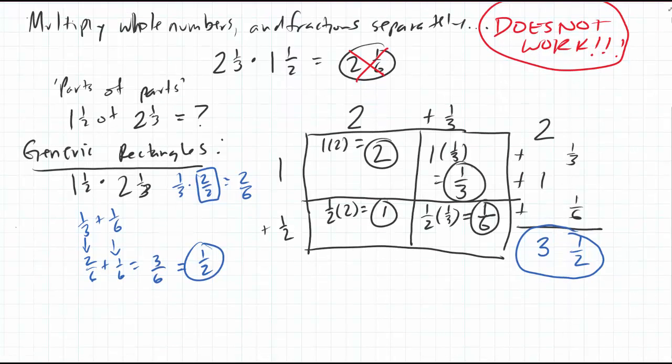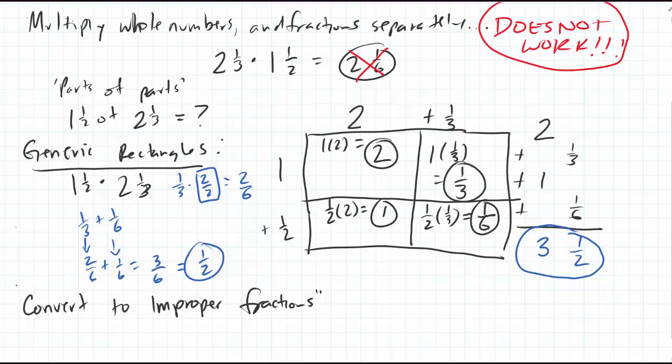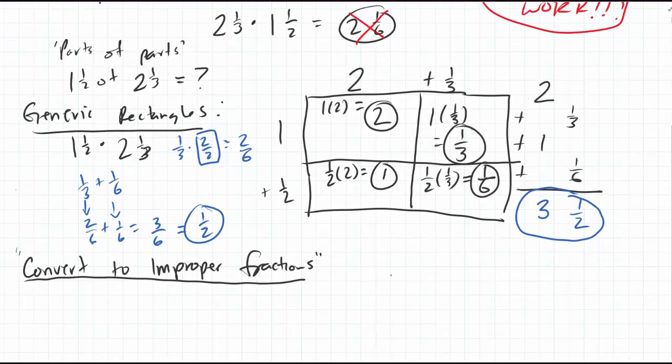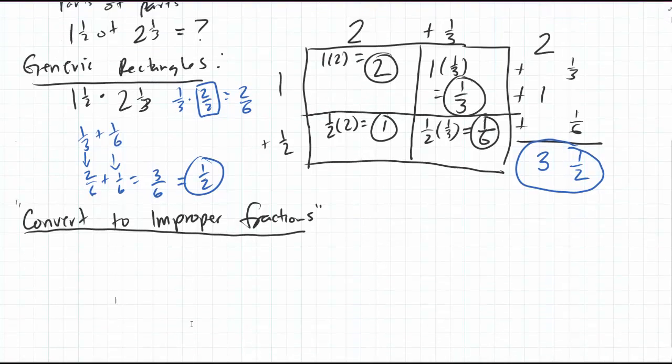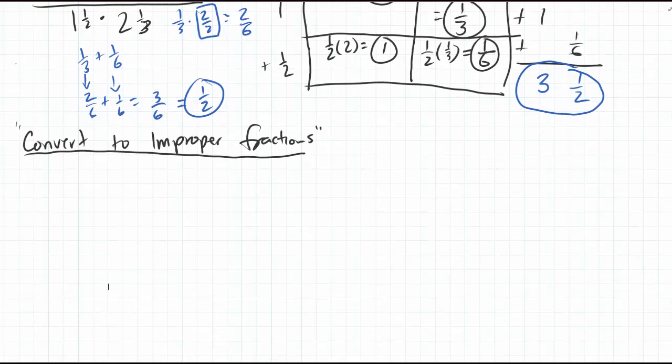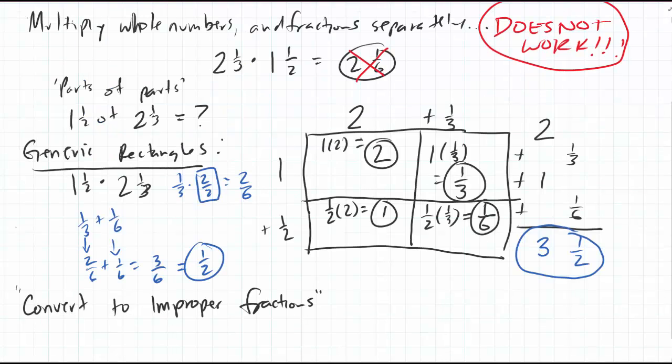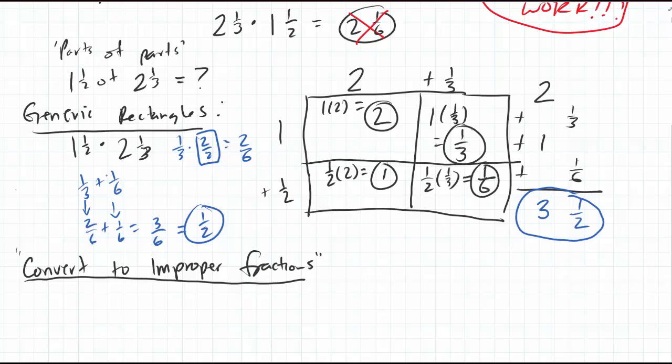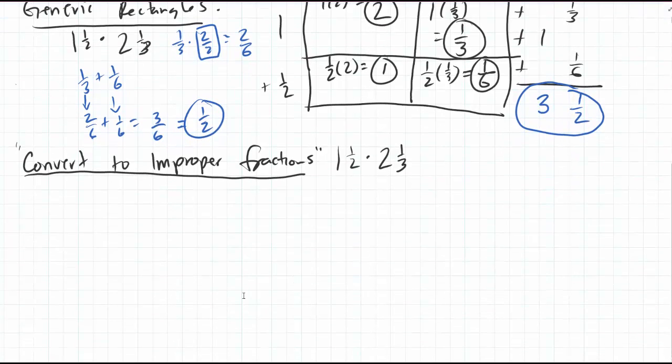Now, do we have to do a generic rectangle every single time? No, we do not. We learned how to do that with the second strategy, which is to convert to improper fractions. So again, we're still going to be multiplying 1½ times 2⅓.